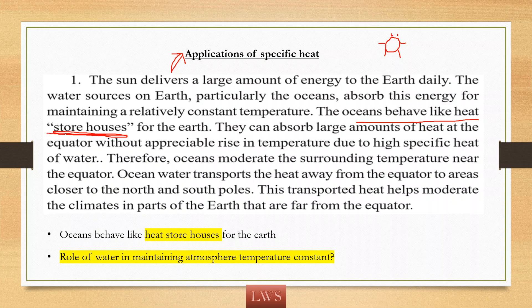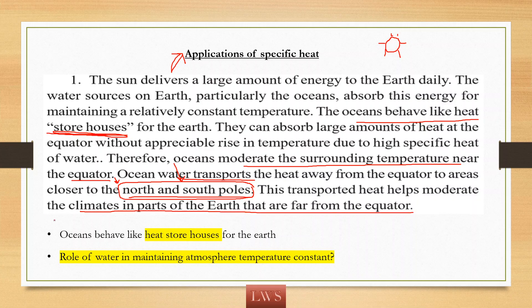The radiated heat energy from the sun is stored in the oceans. The equatorial regions of the earth have very high temperatures with large amounts of heat. The oceans at the equator regions absorb this heat energy, and that heat energy is transported to the polar regions — the north and south polar regions like the Antarctic, which are very cool. So the heat at the equator is transported to polar regions, allowing the earth to maintain a more constant temperature. Remember: oceans behave like heat storehouses for the earth.